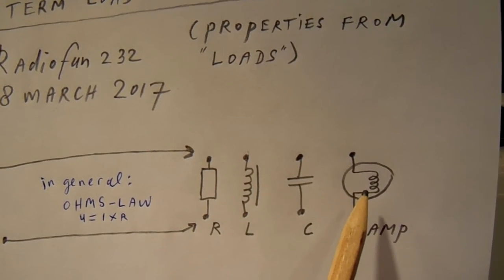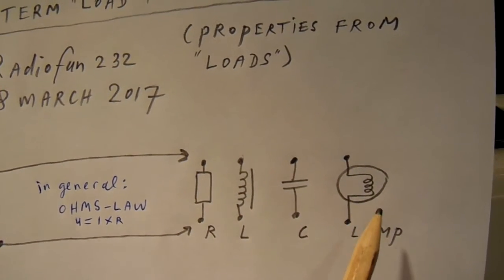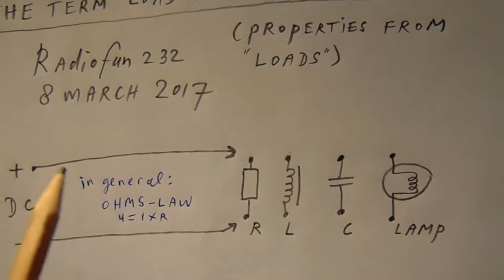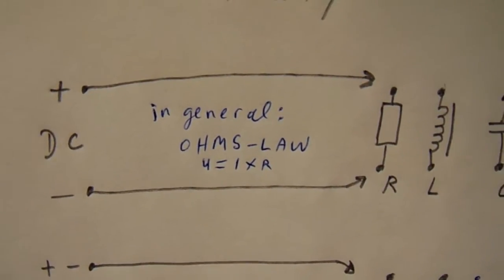So it has a higher resistance. When a lamp gets hot, the filament has a higher resistance, so the current will diminish. All to Ohm's law.